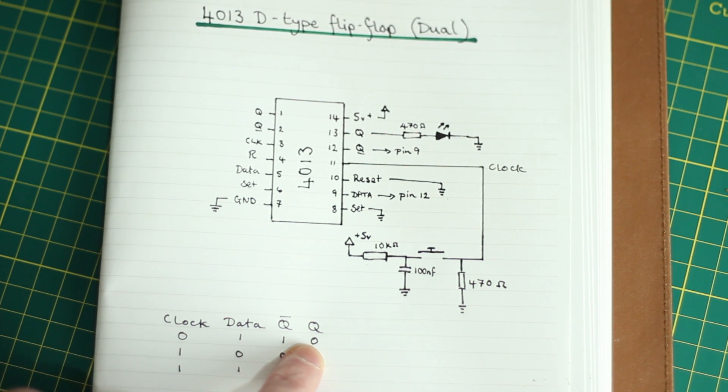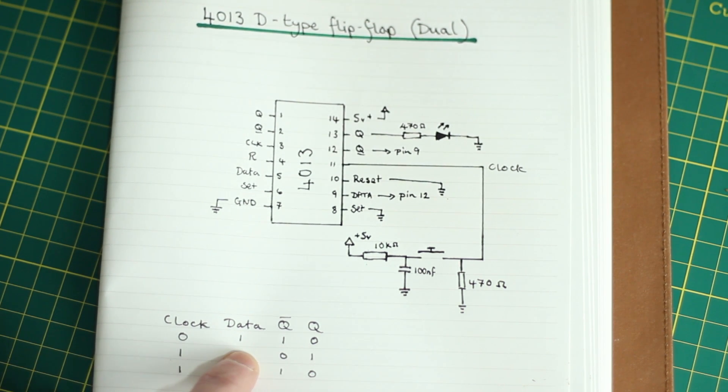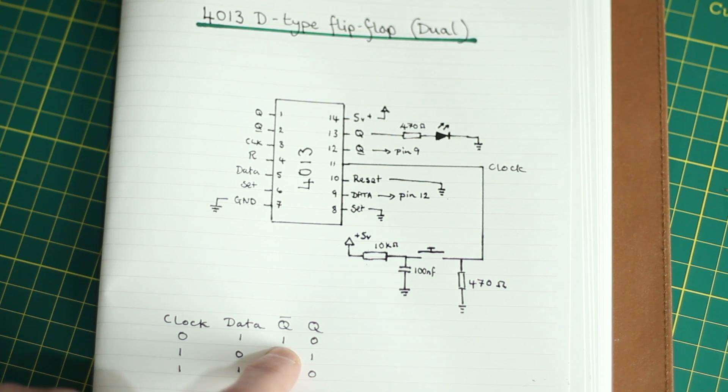And also Q is low as well, so your Q output is low, and data and Q2 are high. And that's because these always have to be opposite. So because we know these pins are connected together, your data pin and your second output, they're both high.